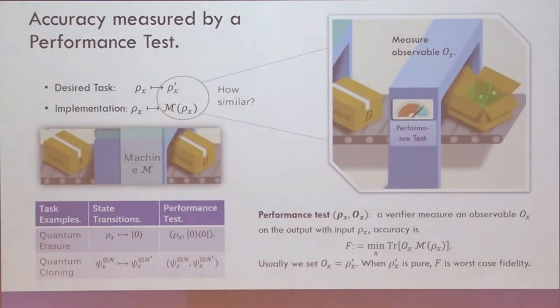Now, in the end of the day, you have to implement the task on a real machine. And this world is quantum mechanical. So the real machine that implements the task obeys quantum mechanics. So it's a CPTP map. So it's a quantum channel. So this real machine, let's call it M, will generate the real output. But our designed task is an ideal task. Its output is rho x prime. So we should ask how similar are they.